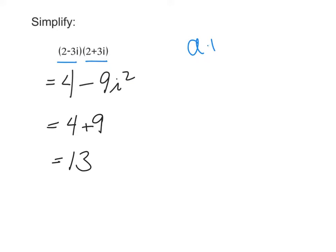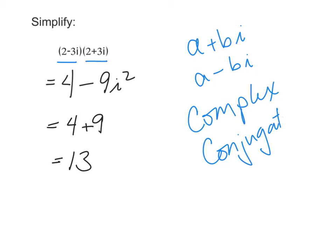When we have this a plus bi and a minus bi, these pairs have a special name. They're called complex conjugates. When you multiply together two complex conjugates, you will get a real number.